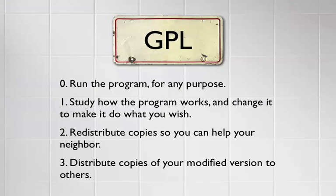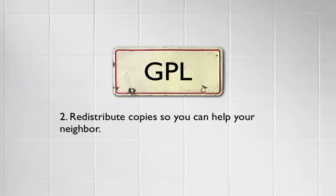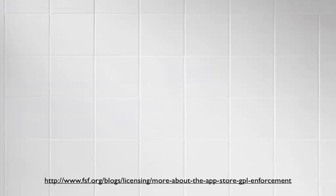Richard Stallman set forth four freedoms when he explained why free software was a good idea. Freedom Zero is the freedom to run the program for any purpose. Freedom One is to study how the program works and change it to make it do what you want — a prerequisite for that is having source code available. Freedom Two is to freely redistribute copies to your neighbor. Freedom Three is to distribute modified copies of a program. The spanner in the works for things like the App Store is Freedom Two — the ability to redistribute copies to help your neighbor.